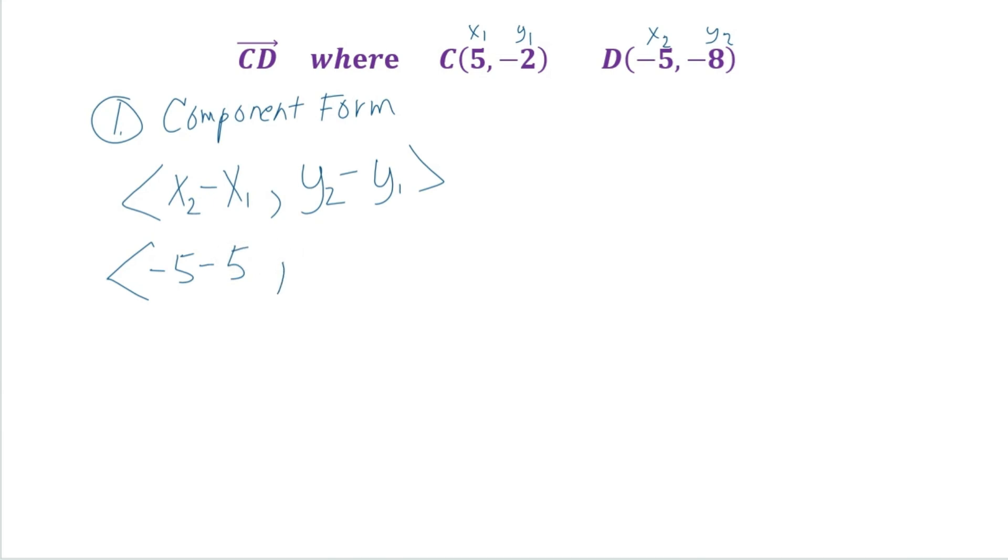And we have y2, which is negative 8, and we're going to subtract negative 2. So our x-coordinate is going to be negative 10. And our y, this becomes plus plus, is going to be negative 6.